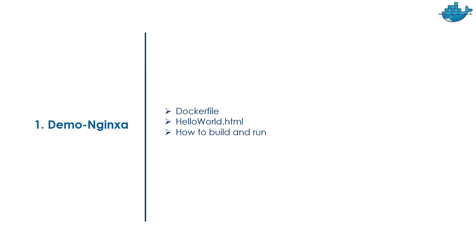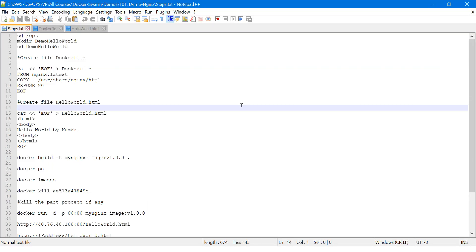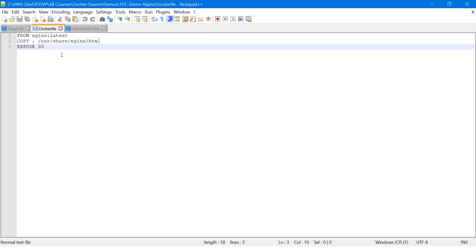Hello and welcome. In this video we are going to talk about how to use a Dockerfile and create a simple hello world HTML file. With the help of a docker build command we want to see how whatever image we are creating we are going to run it. For this demo we need one Dockerfile, and we will create a hello world HTML file and then run it.